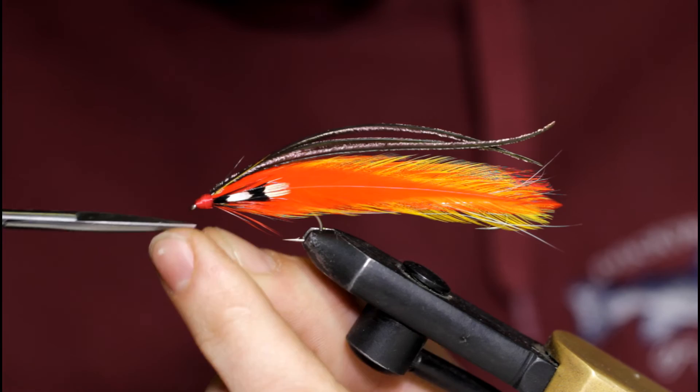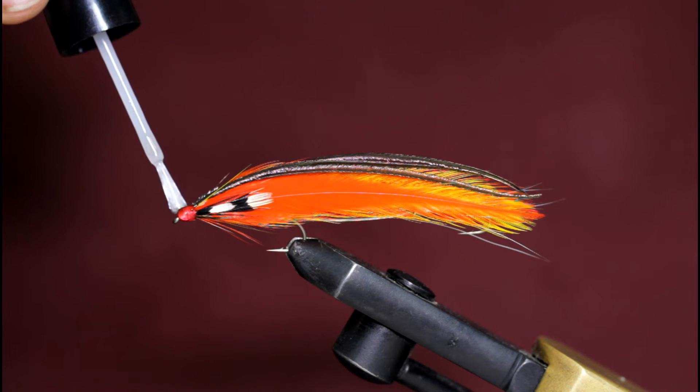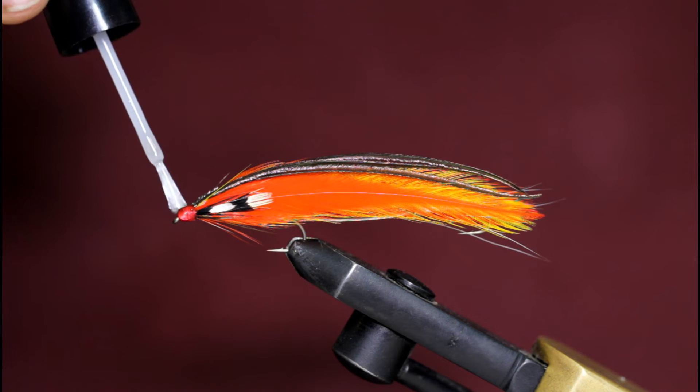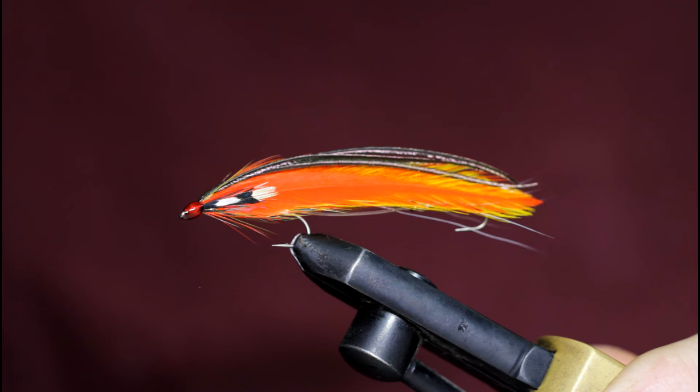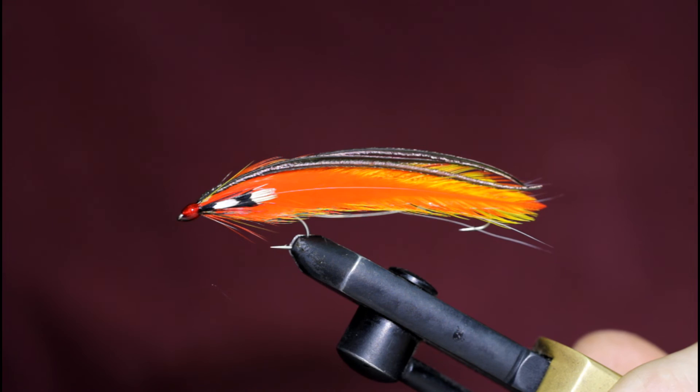I'll throw in a couple of whip finishes and snip off the thread. And the last step is some head cement. And I'll clean that eye out in a second. But that is the finished Hazel. An Arthur Libby pattern. Beautiful looking fly. A couple of variations like the rib and the jungle cock eye.